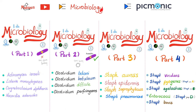In video number 1 in this microbiology playlist, also in the Picmonic playlist, we talked about Actinomyces israelii, Listeria, Corynebacterium diphtheriae, and Nocardia. In video number 2, we talked about the Clostridia: C. tetani, C. botulinum, C. difficile, and C. perfringens. In video number 3, we talked about Staph aureus, Staph epidermidis, Staph saprophyticus, and Strep pneumo. In video number 4, we continued the streptococci — Streptococcus viridans, pyogenes, and agalactiae. Keep Streptococcus agalactiae in mind because we will talk about it today — it's also known as group B streptococci. Also, enterococci and streptococci were topics in video number 4.